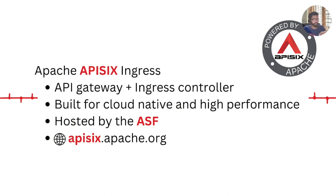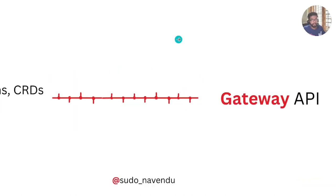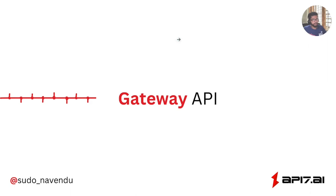We are now at the Ingress controller level in the evolution process. What we've discovered is that the Ingress API is quite limited: to do complex things you either need custom annotations, or you have to discard the Ingress API entirely and use CRDs. This makes it non-portable — you're locked in with a particular vendor and there is no standard way to extend or add features to the Ingress API.